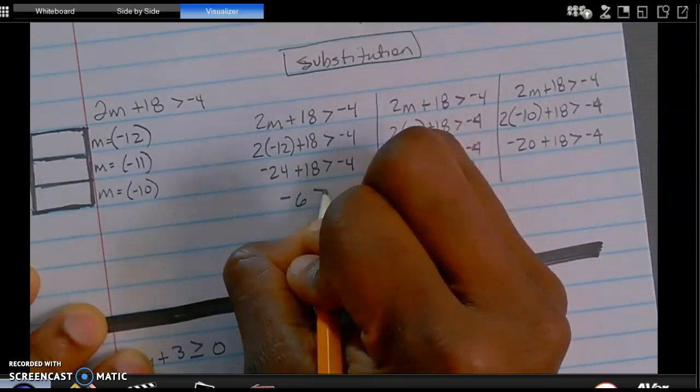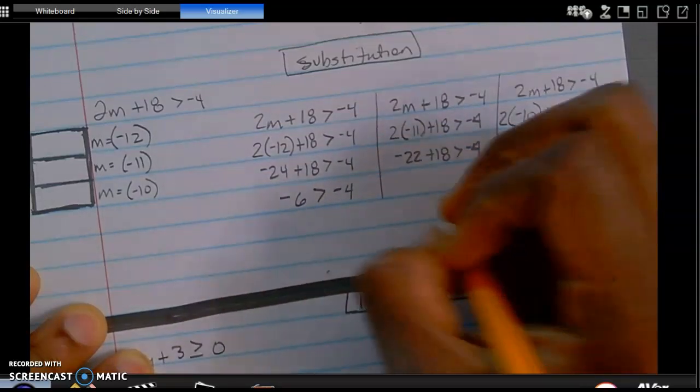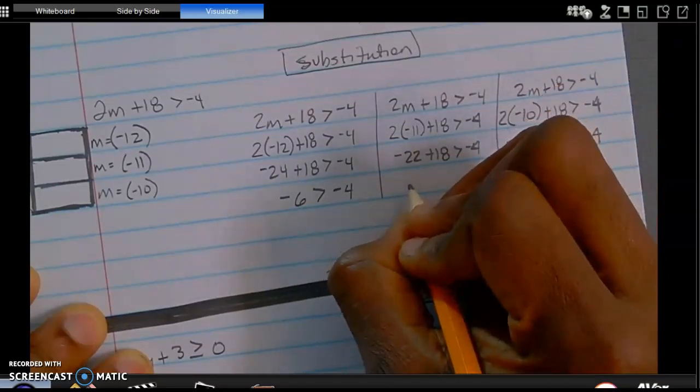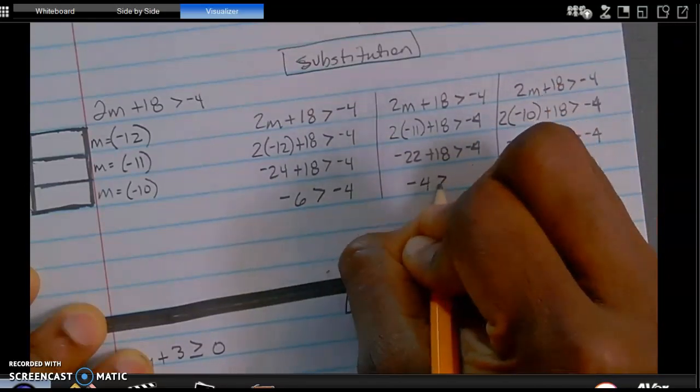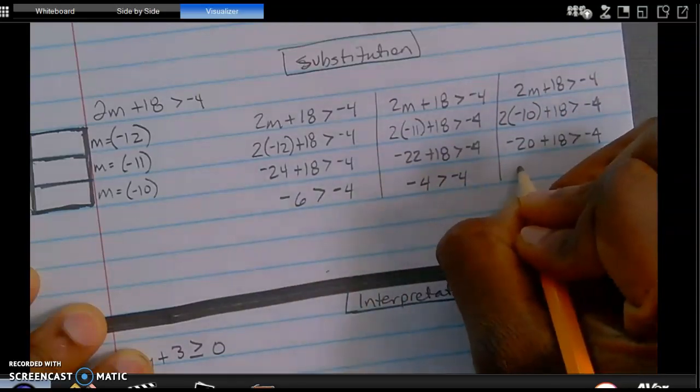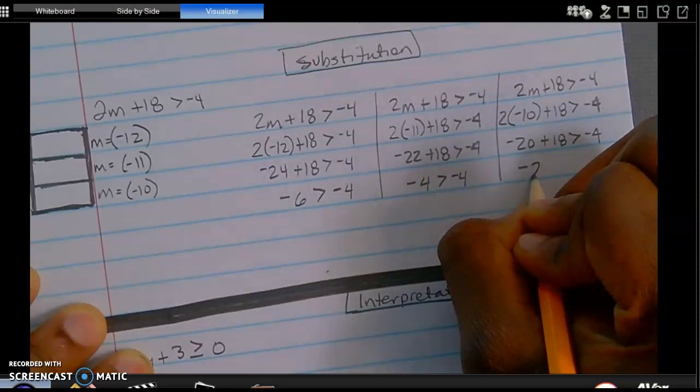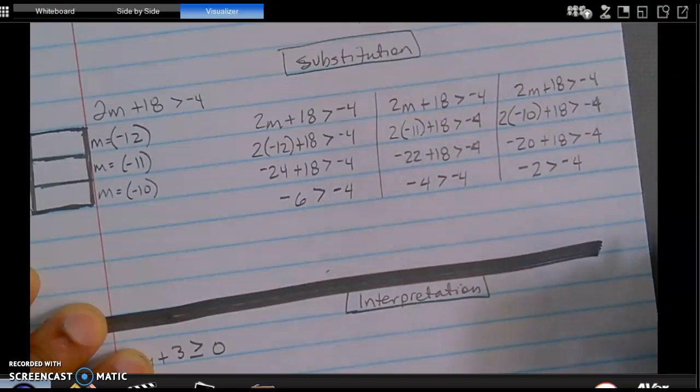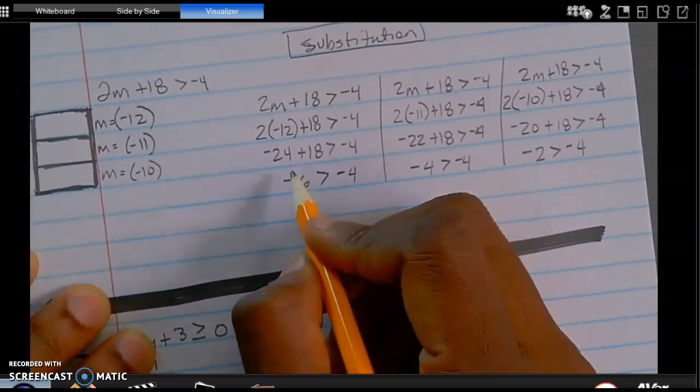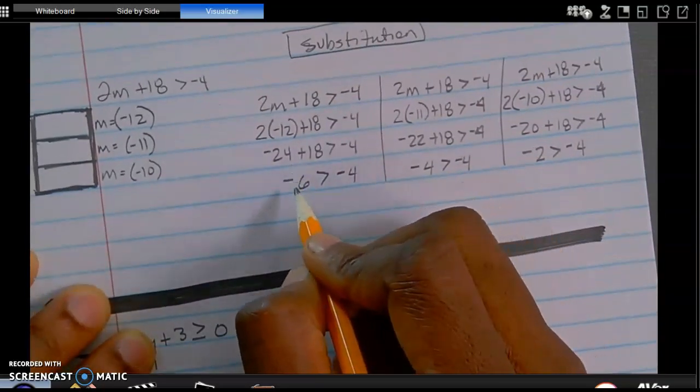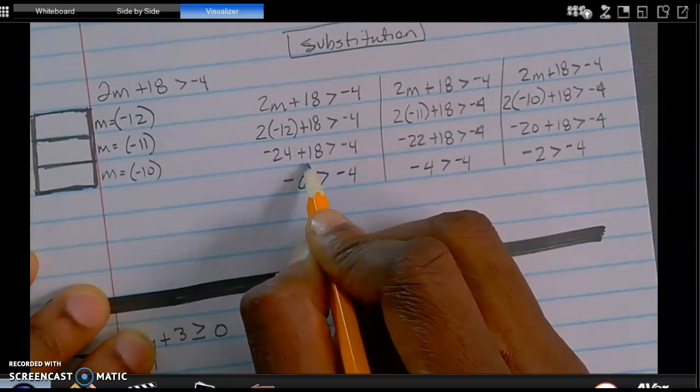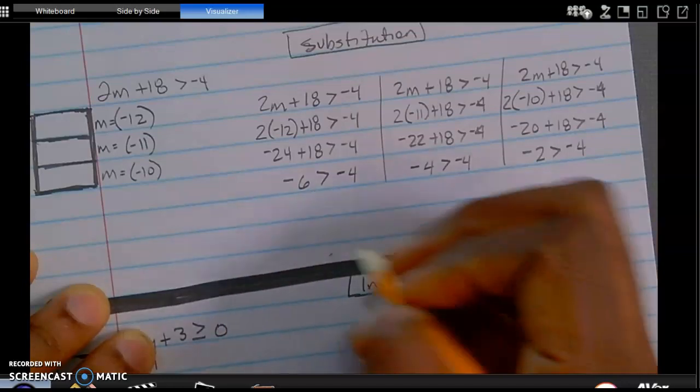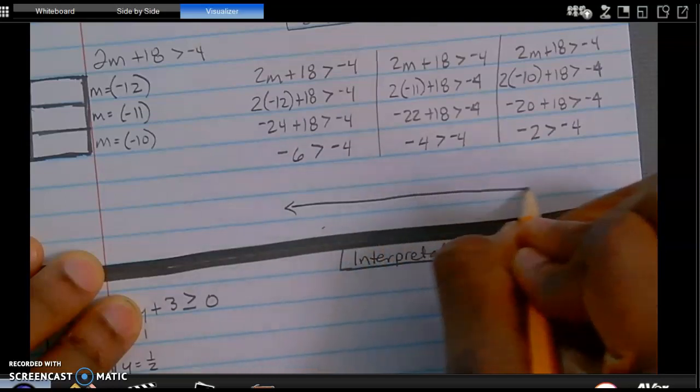So negative 6 is greater than negative 4. Is that true? And then negative 22 plus 18 is going to be negative 4. Is that greater than negative 4? And then negative 2, is that greater than negative 4? So now it's just a matter of me going back through and figuring out what is what. I know that negative 24 plus 18 is going to yield negative 6.